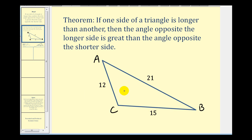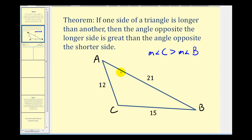So if we had a triangle like this, notice the side opposite angle C is 21 units, and the side opposite angle B is 12 units. Therefore, by this theorem, the measure of angle C would be greater than the measure of angle B. And since the side opposite angle C is actually the longest side of the triangle, we could also conclude that the measure of angle C is greater than the measure of angle A. Notice the side opposite angle A is only 15 units.